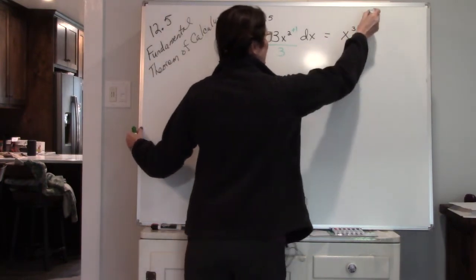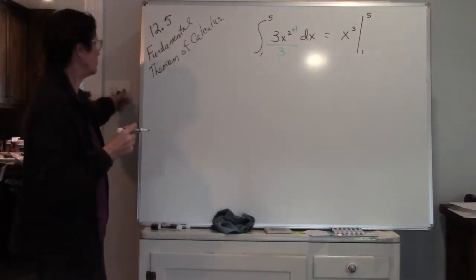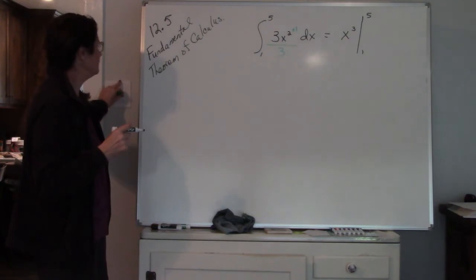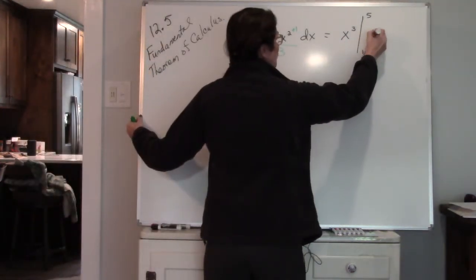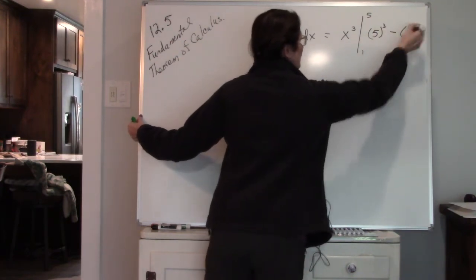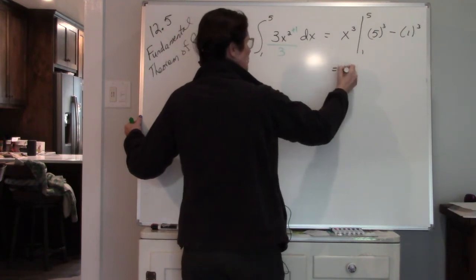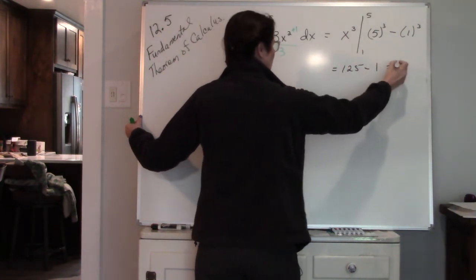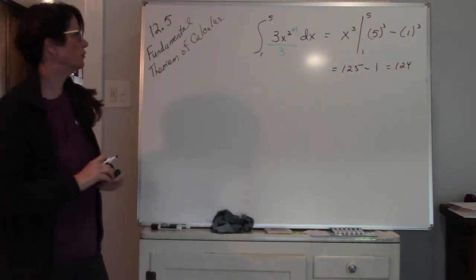I'm going to evaluate that between 1 and 5. Notice the notation — I'm evaluating it between 1 and 5. So now I just plug my values in: when x is 5 cubed and when x is 1, and then I cube it. So 5 cubed is 125, 1 cubed is 1. So the area under the curve is 124.